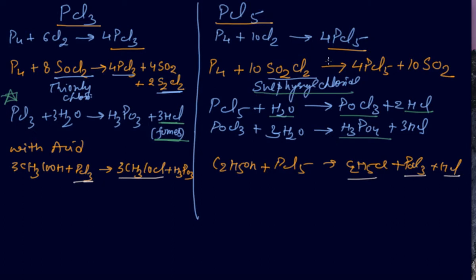The same reaction is going with ethanoic acid. Ethanoic acid CH3COOH with PCl5. What is coming? The difference is CH3COCl with POCl3 and HCl. Now the last of this one is the structure.